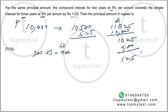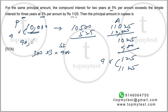The difference between compound interest and simple interest is 1,025 minus 900, which is 125 rupees for a principal of 10,000 rupees. We need the difference to be 1,125, so multiplying by nine: 10,000 into nine gives 90,000 rupees as your original principal. Simple application of unitary method — job done.